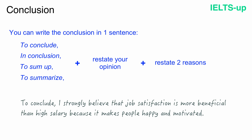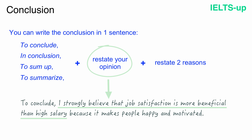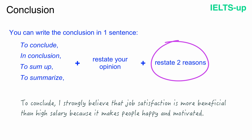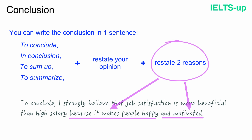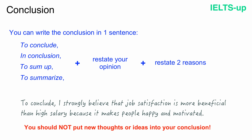As you can see, I started with the phrase 'to conclude,' showing the examiner that I am starting my conclusion paragraph. Then I restated my opinion: 'I strongly believe that job satisfaction is more beneficial than high salary.' After that, I briefly stated the reasons — 'it makes people happy' is my first reason, and 'motivated' is my second reason. The conclusion paragraph shortly summarizes all previous ideas without giving new information. Remember, you should not put new thoughts or ideas into your conclusion — you have already put your ideas into the body paragraphs.